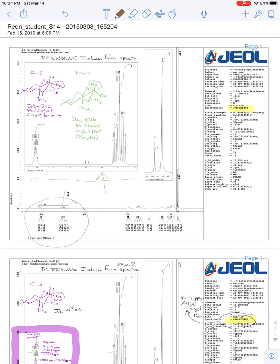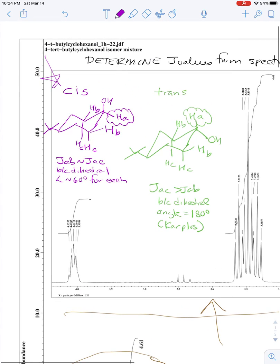And I've written the cis product in purple and the trans product in green. And for the cis product, if we blow it up a little bit, the two coupling constants JAB and JAC are about the same because the dihedral angle is about the same for each.